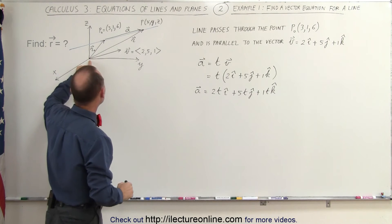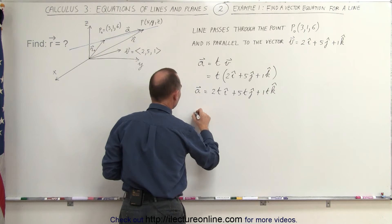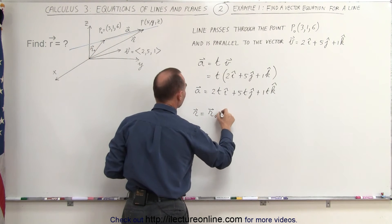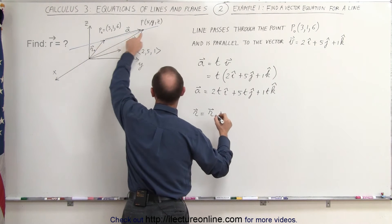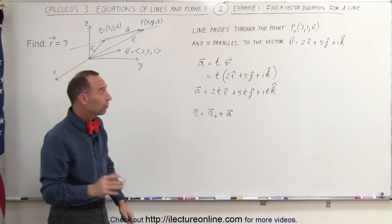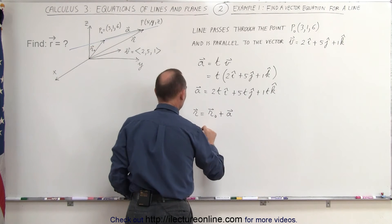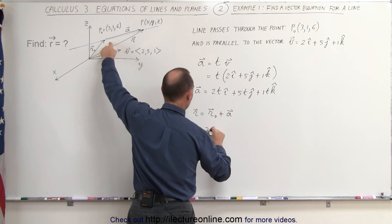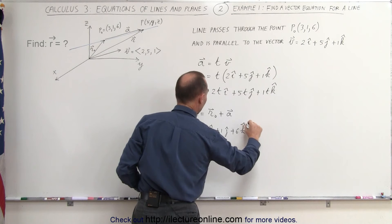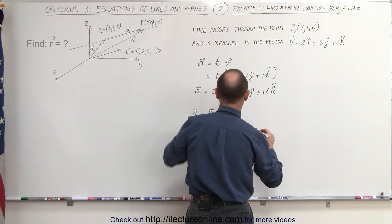Now we can also say that the vector pointed to the unknown point x, y, z — the r vector, or the position vector — is equal to the sum of the distance to the known point, r-sub-naught vector, plus the vector a, the distance from the known point to the arbitrary point on the line. Since r-sub-naught is a known vector because we know the position of that point, we can say that the r vector is equal to 3i plus 1j plus 6k, and then we add that to the vector a, which we define with parameter t relative to vector v.